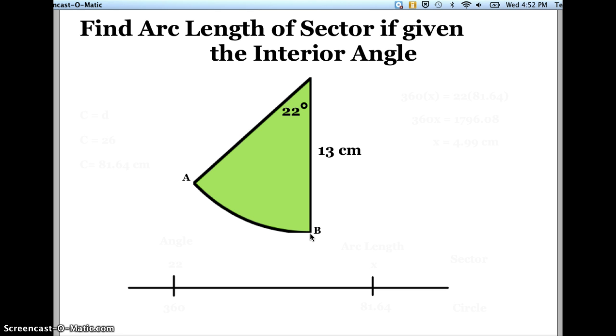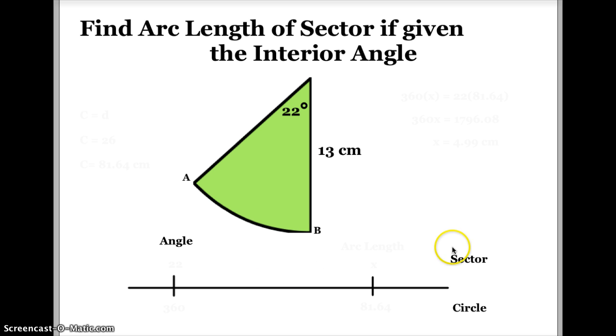Now there's two parts of the circle I'm going to be using. I'm going to be using the total circle, and I'm going to be using the sector of the circle. And there's also two variables I'm going to look at. I know that this sector has an angle of 22 degrees, and I know that the total circle has 360 degrees in it. So I'm going to use my angle, because I know two variables. I know both the angle of the sector and the angle of the circle. And I'm also going to use my arc length.